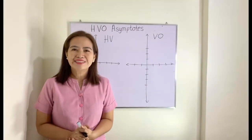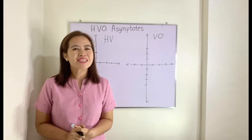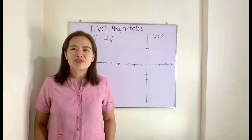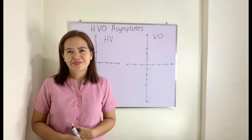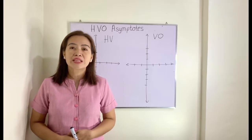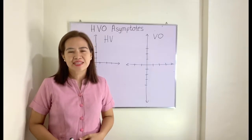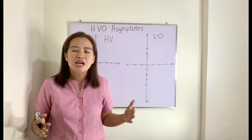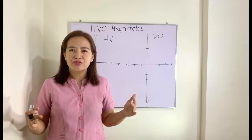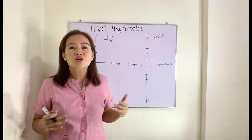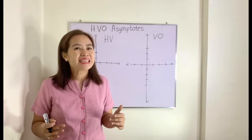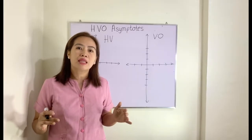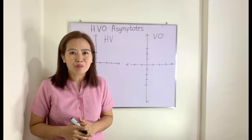Good day everyone. Today we will be discussing HVO asymptotes of the graphs of rational functions. Let us define first what an asymptote is. An asymptote is a straight line in which a graph or a curve moves closer and closer to it but never touches it — they get near each other but never meet.